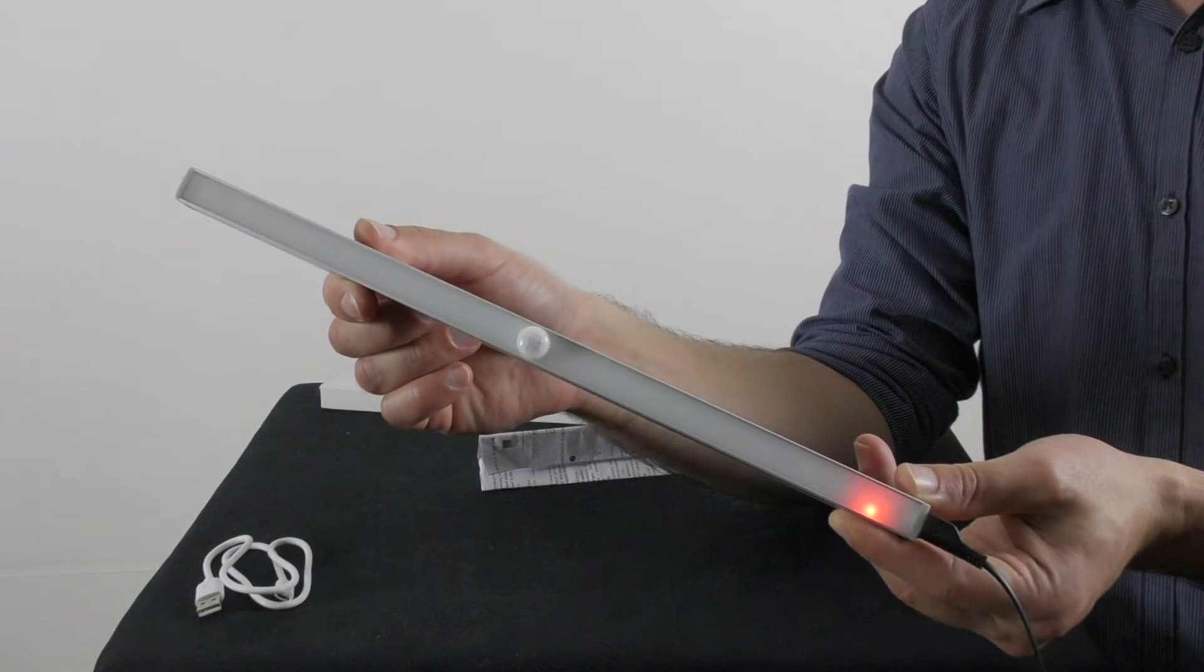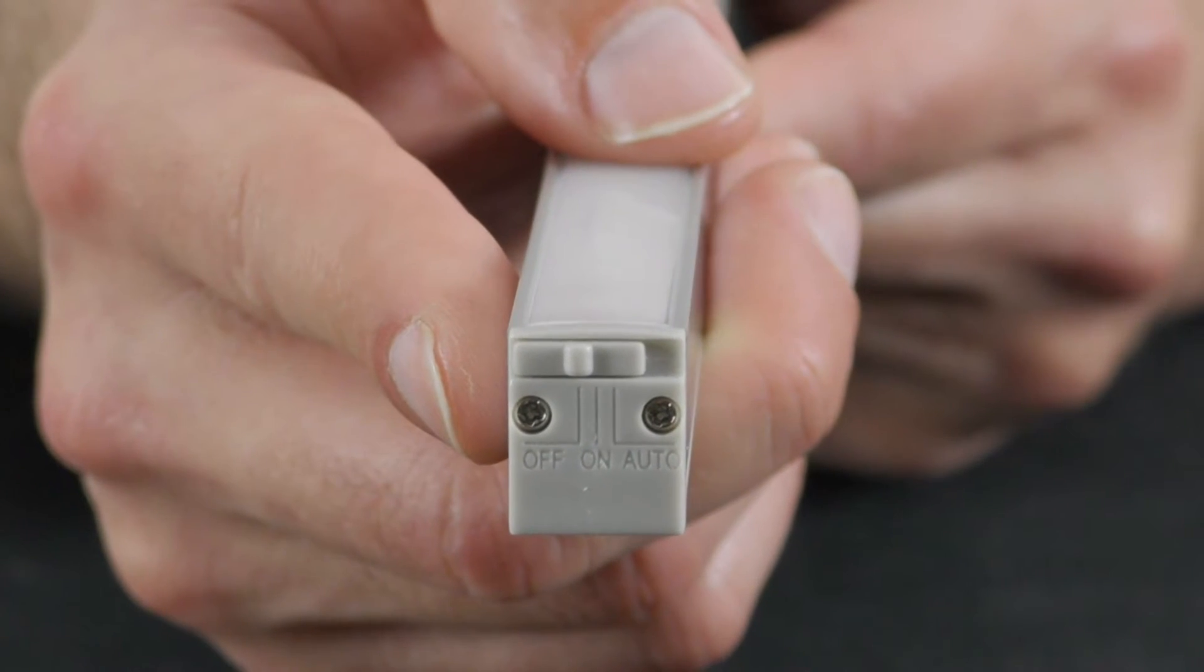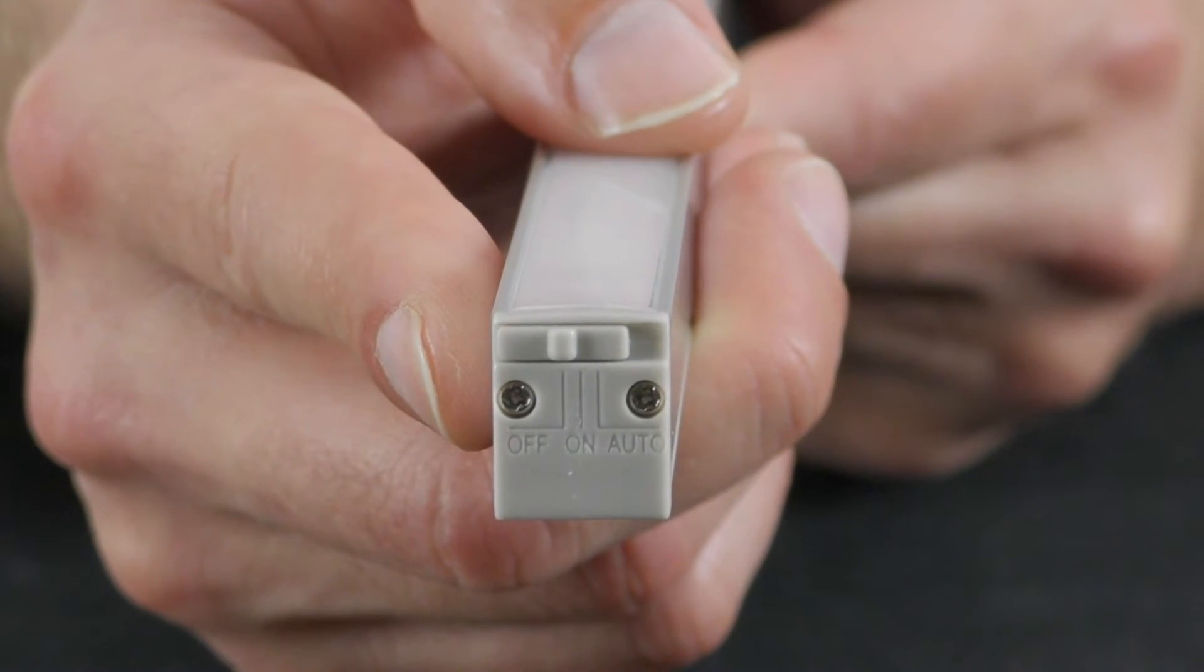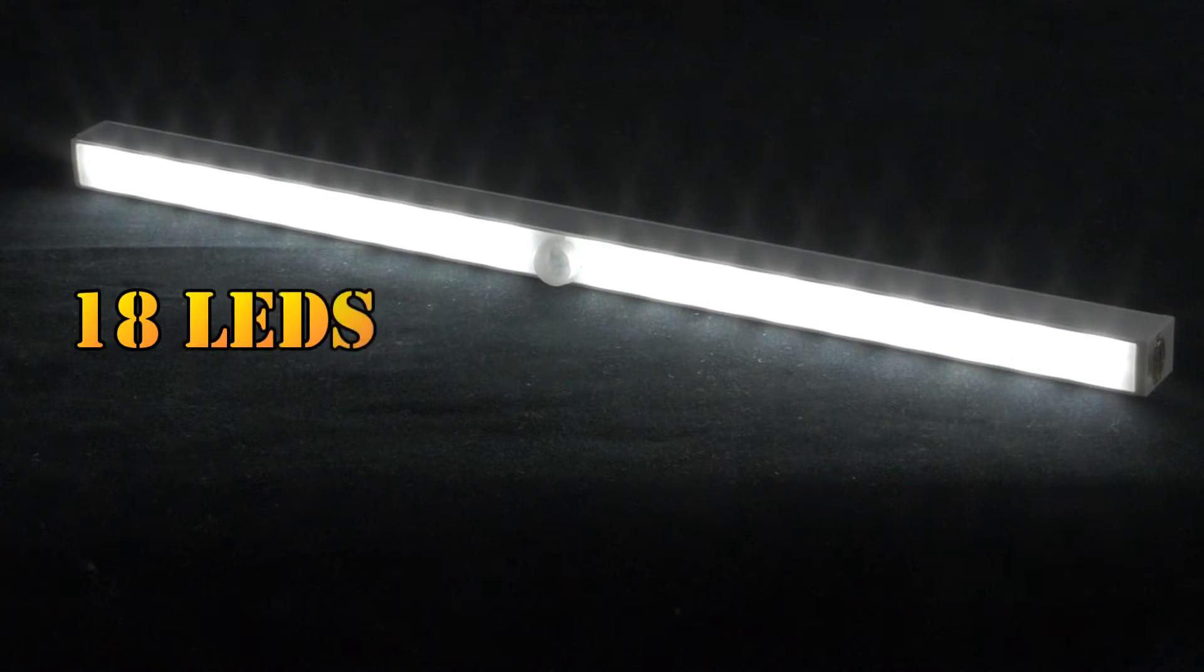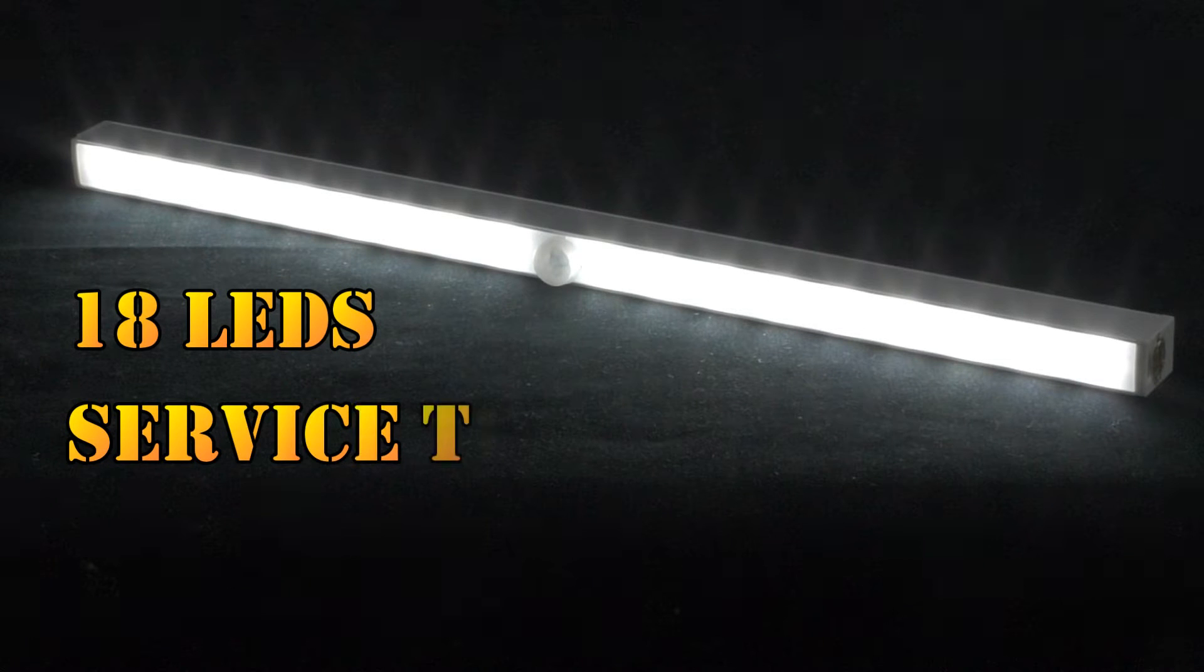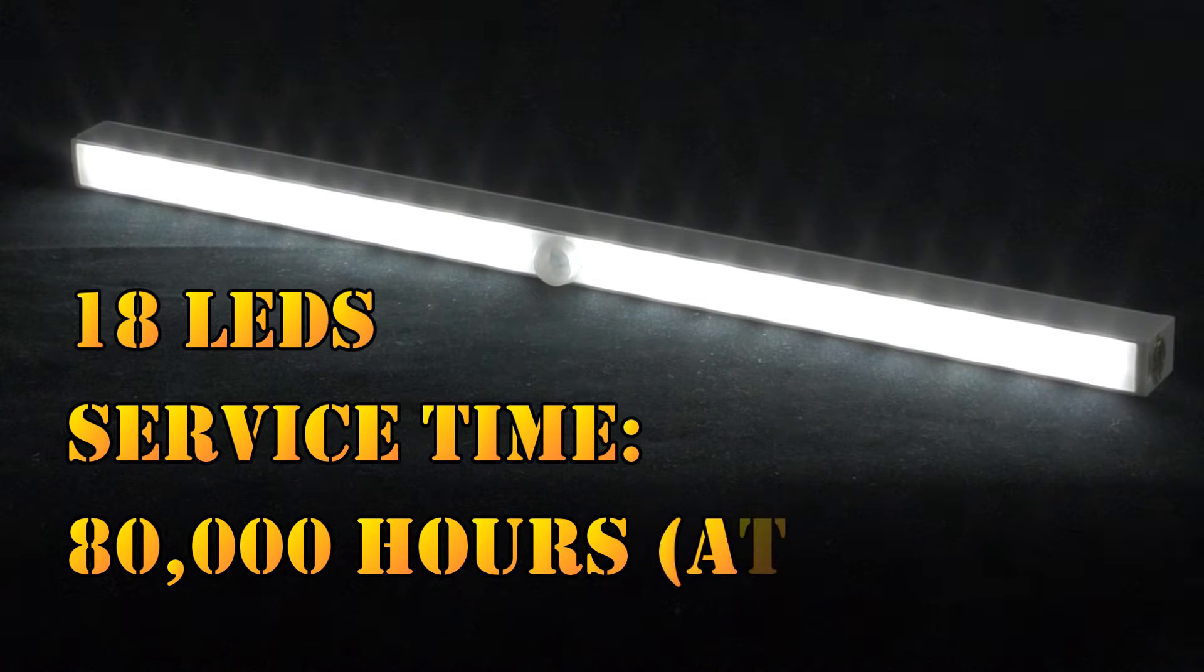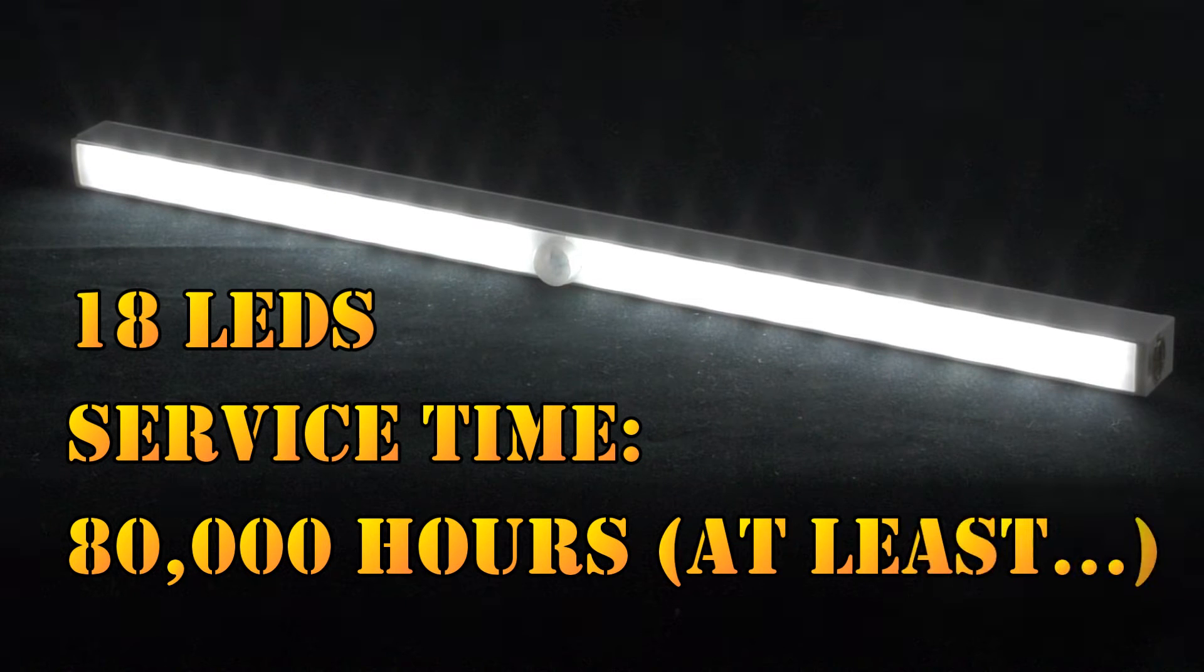On the other side of the bar, you will find a tiny switch that can be set to either off, on, or auto mode. Inside the bar hides 18 LED diodes that work just perfect and will be suitable for bedrooms, stairs, cabinets, and closets. The light color in this specific bar is white, but I guess this is something that can be modified.